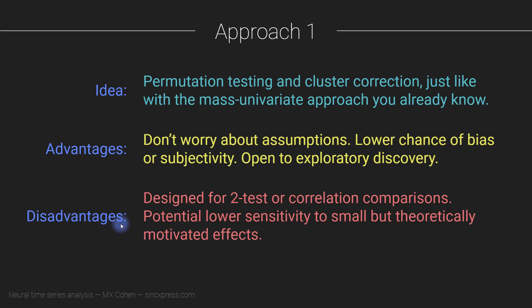A disadvantage of Approach 1 is that this general statistical approach with permutation testing is really optimized for a two-test comparison or a correlation coefficient. This kind of approach is not really amenable to more complicated factorial designs, like a two-by-five factorial design where you'd be running ANOVAs. This also means there is potentially lower sensitivity to small but theoretically motivated effects.